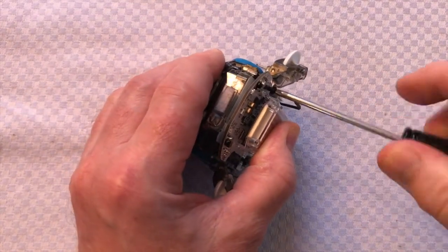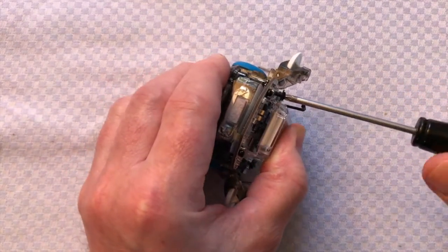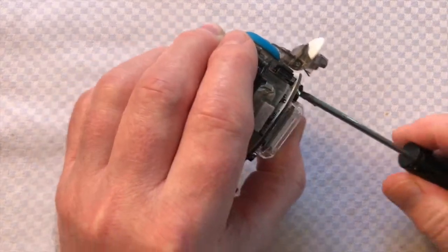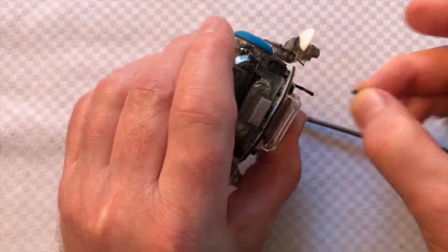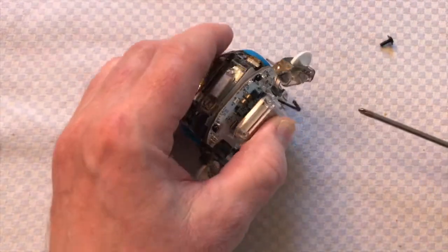Be very careful when you're doing this because you actually want the screw to drop away from the Sphero, because you don't want it touching any of the other metal contacts. So just put that somewhere safe.